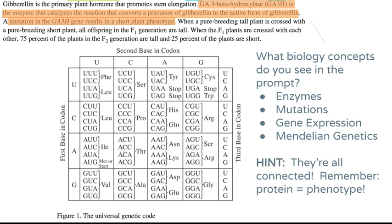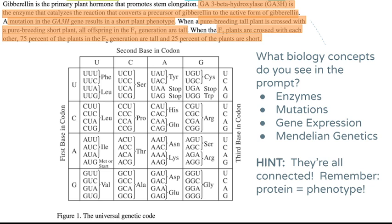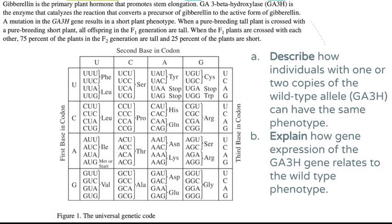Then I see mutations — a mutation in that gene makes the plant short — which falls under gene expression, because mutating the gene changes the protein and changes the phenotype. Then I see Mendelian genetics: crossing a pure-breeding tall plant with a pure-breeding short plant gives all tall F1s, meaning tall is dominant. When F1s cross, I get a 3:1 phenotypic ratio — three tall to one short. Everything connects because protein equals phenotype.